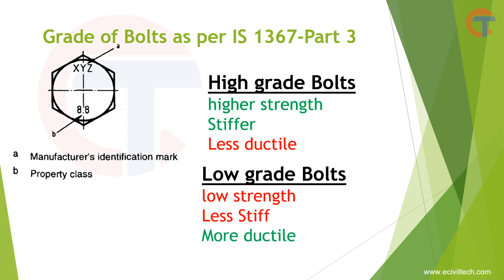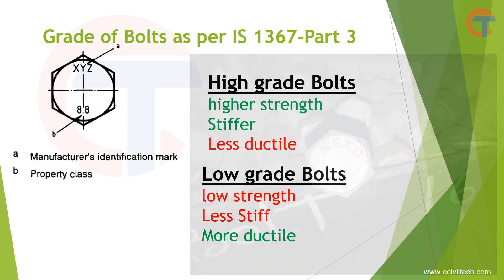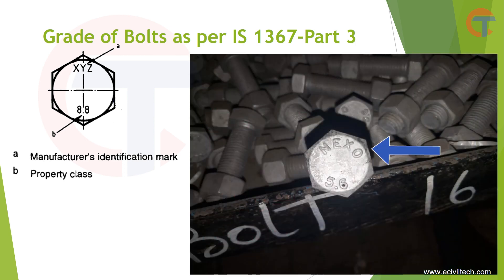This image shows one of the methods to indicate the grade on the head of a hexagonal bolt. You can see that 'XYZ' is the manufacturer's identification mark, and the endpoint at grade is the bolt grade — or you can say property class. In this picture, this is the brand name and '5.6' is the grade of the bolt.